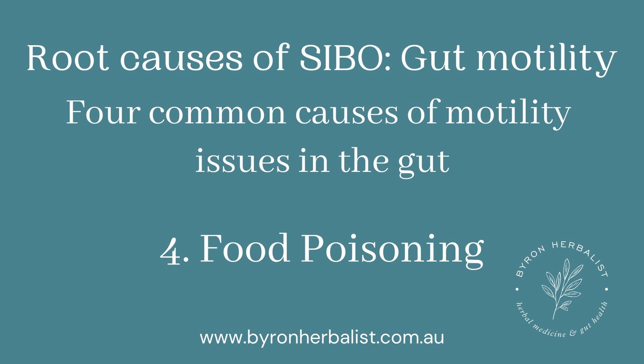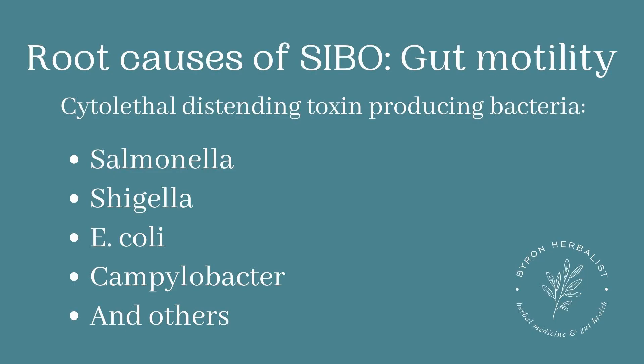Number four, food poisoning leading to SIBO through this gut motility axis. The science is still being teased out — you can check the link below the video for more info. The long and short is that food poisoning bacteria tend to secrete a toxin called cytolethal distending toxin. Salmonella, Shigella, E. coli, Campylobacter, and a handful of others can trigger this immune dysregulation in some patients, leading to a misfiring that causes motility dysregulation and poor motility. It's important to address this — there's a blood test you can do, though it's expensive — and I'm always screening for and addressing this post-infectious presentation.